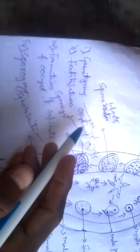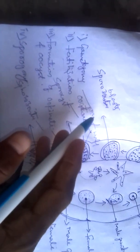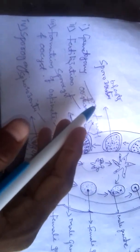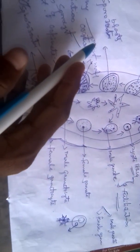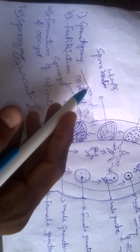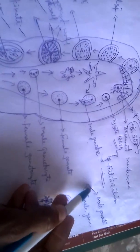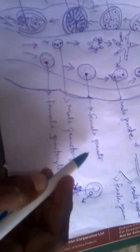Let's discuss first of all gametogony. Gametogony is nothing but the formation of male gamete and female gamete — that is called gametogony.